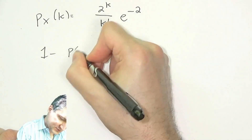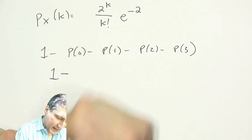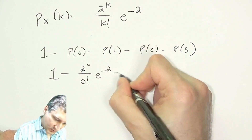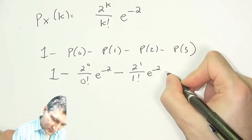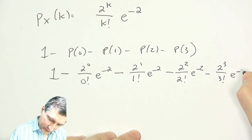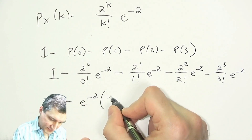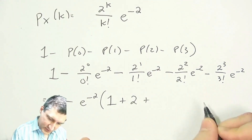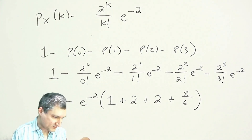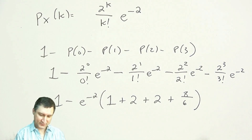So one minus p0 minus p1 minus p2 minus p3 is one minus: the PMF at zero is two to the zero over zero factorial times e to the minus two, then two to the one over one factorial times e to the minus two, two to the two over two factorial times e to the minus two, and two to the three over three factorial times e to the minus two. There's a common e to the minus two factor. Two to the zero over zero factorial is one, two to the one over one is two, two to the two over two factorial is also two, and two to the three over three factorial is eight over six. I could add up these numbers to get a numerical value, but this is the easiest way to write it.